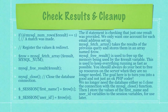The if statement is checking that just one result was provided — we only want one account for each email address set up. MySQL Fetch Array takes the results of the previous query and stores them in an array named row. MySQL Free Result is used to free up the memory being used by the result variable. This is used to keep everything running as fast as possible. You should always do your best to free up resources on the server when they're no longer needed.